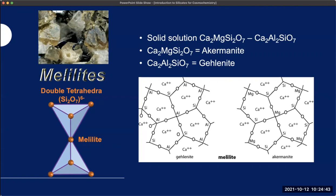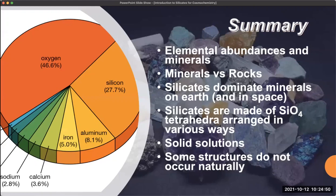As a summary: we talked about elemental abundances and how that impacts minerals, going from what's out there in space to what's in the Earth's crust. We talked about the difference between minerals and rocks, and that silicates are dominant on Earth and in space, being made up of SiO4 tetrahedra arranged in different ways. We talked about solid solution — being able to make all sorts of compositions that are not stoichiometrically precise — and how some compositions don't occur naturally because of the size of ions, for instance calcium being really big so not every possible combination of compositions can form.